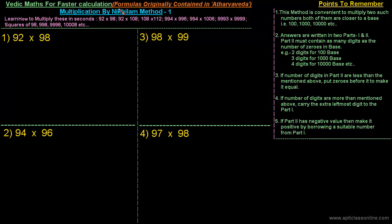From that ancient text there is a method called the Nikhilam method, which is basically a method of multiplication. In this class I'll be talking about multiplication by the Nikhilam method, and with its help we'll learn how to multiply numbers like 92×98, 92×108, 108×112, and 994×996 — these complicated calculations in just seconds.